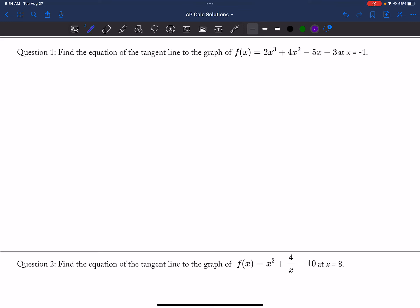Alright, so I want the equation of the tangent line. We're going to do all the odd-numbered questions. So f prime of x is equal to 6x squared plus 8x minus 5.